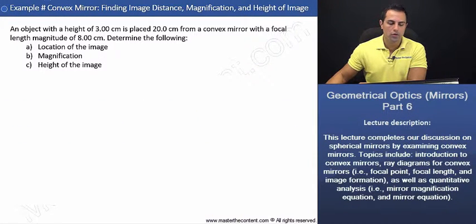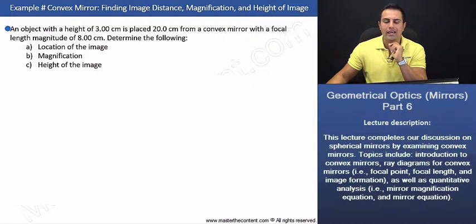Let's begin by reading our question. Example: convex mirror, finding image distance, magnification, and height of image. An object with a height of 3 centimeters is placed 20 centimeters from a convex mirror with a focal length magnitude of 8 centimeters. Determine the following: location of the image, magnification, and height of the image.